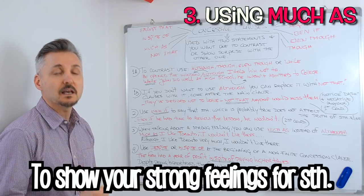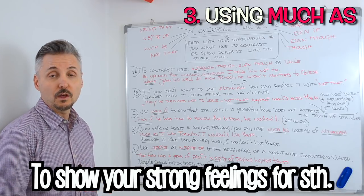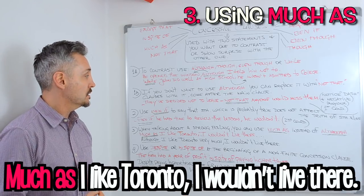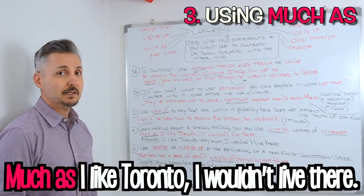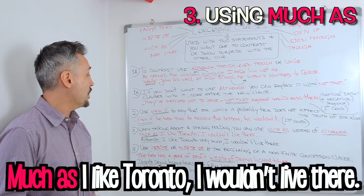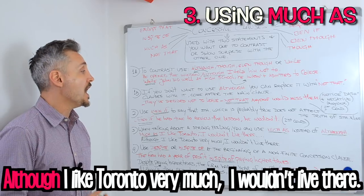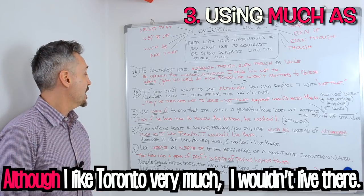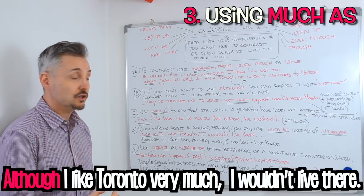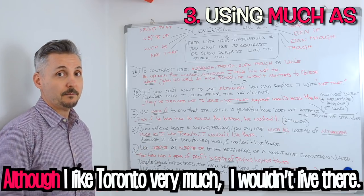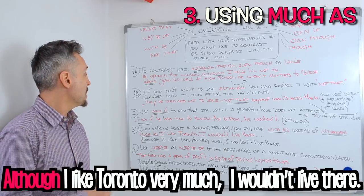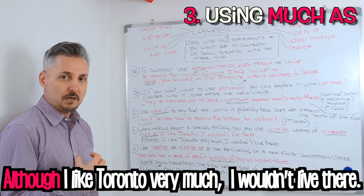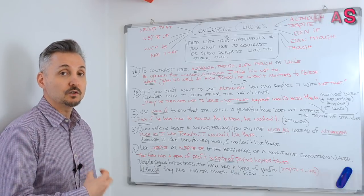What about if you want to show your strong feeling? Then you use 'much as' instead of 'although.' Let's take a look at my example: Much as I like Toronto, I wouldn't live there. It's the same as saying, although I like Toronto very much, I wouldn't live there. I prefer to use 'much as I like Toronto' because it shows a strong feeling.